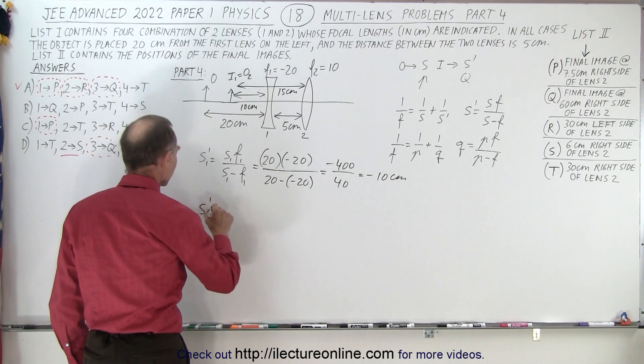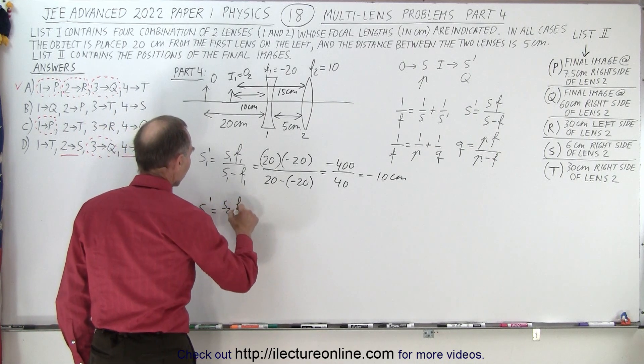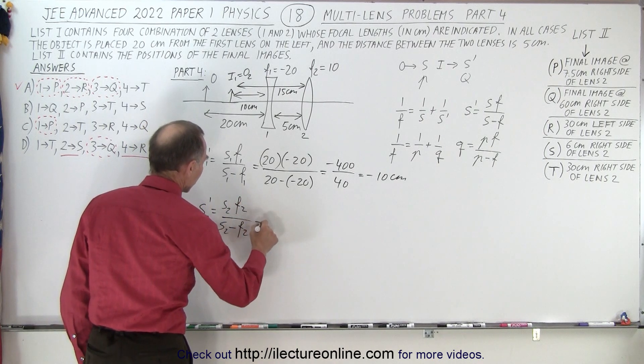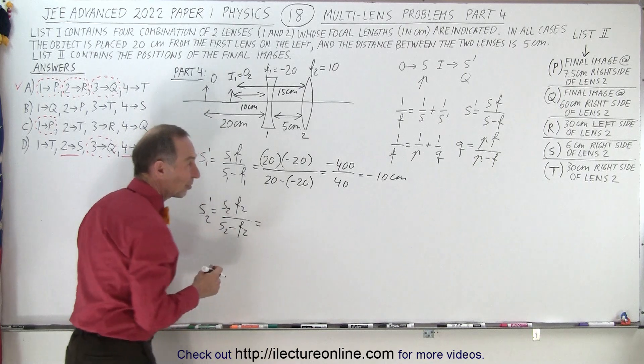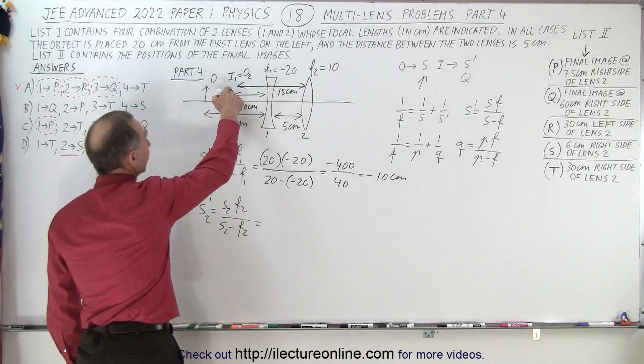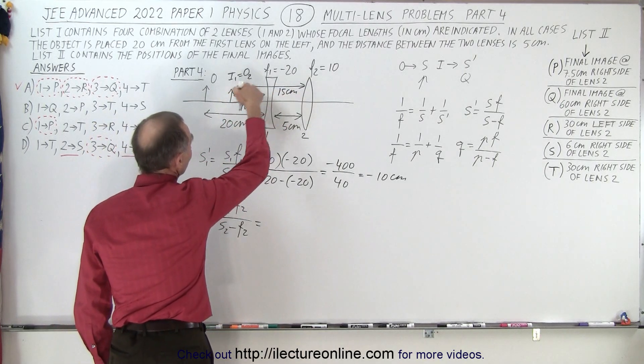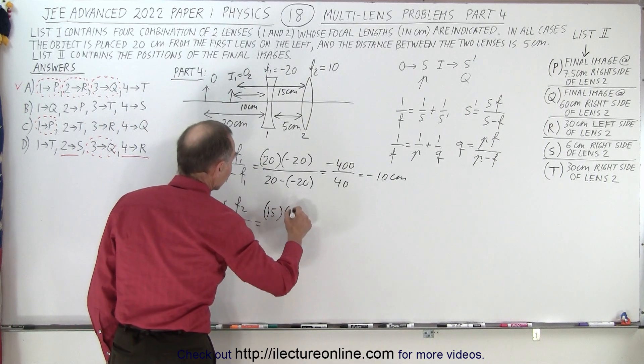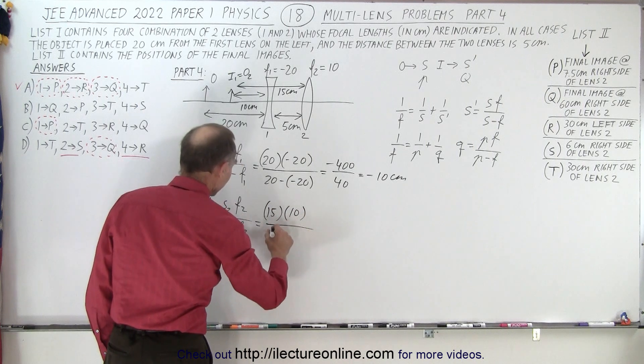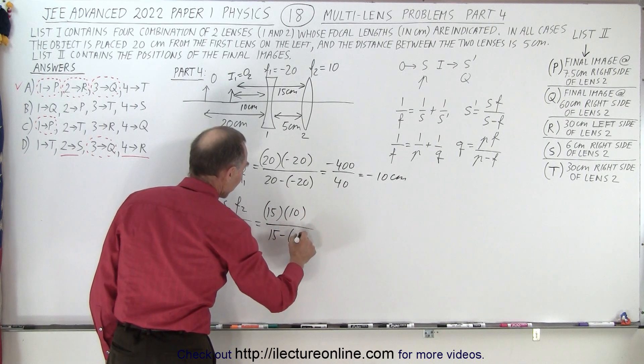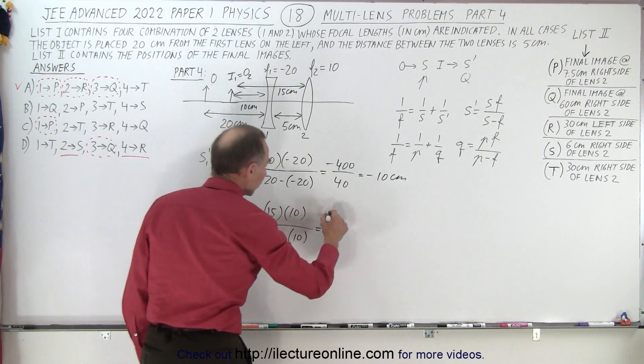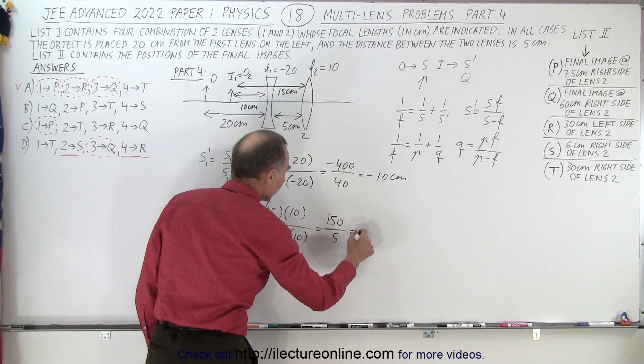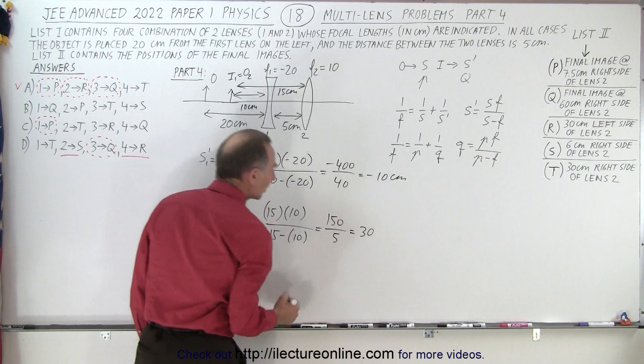So S2 prime equals S2 F2 divided by S2 minus F2. S2 is the object distance of the second object to the second lens, which is now 15 centimeters. The focal length of the second lens is positive 10. 15 minus a positive 10. So this becomes 150 divided by five, which is 30 centimeters.